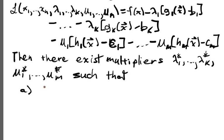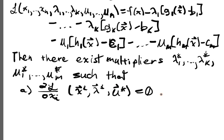A, the partials DL/DXi at X star, lambda star, mu star, are all zero for i equals 1 up to N.